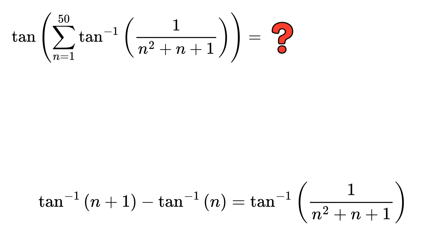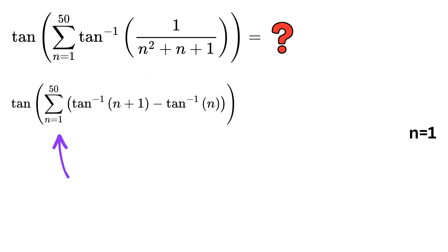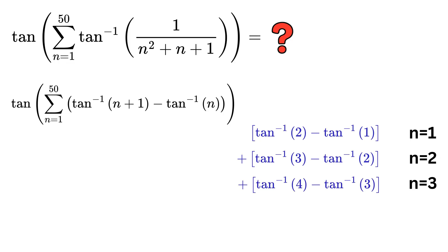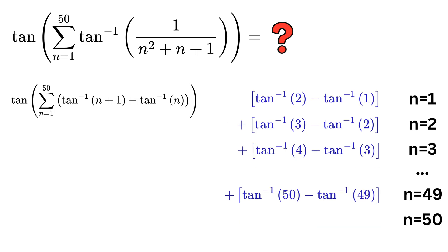Now when we put n equal to 1, the term becomes the tangent inverse of 2 minus the tangent inverse of 1. Next, when we put n equal to 2, we get the tangent inverse of 3 minus the tangent inverse of 2. Then for n equal to 3, we get this. If we keep going like this and put n equal to 49, we get the tangent inverse of 50 minus the tangent inverse of 49. Finally, when we put n equal to 50, we get the tangent inverse of 51 minus the tangent inverse of 50.